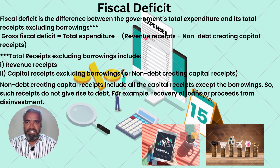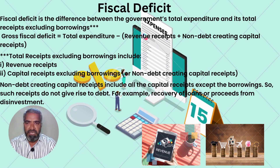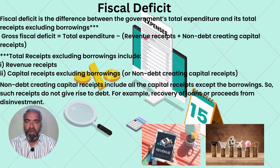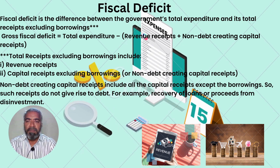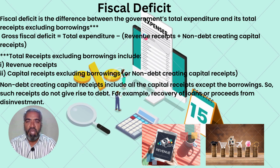Fiscal deficit is the difference between the government's total expenditure and its total receipts excluding borrowings. Gross fiscal deficit is equal to total expenditure minus revenue receipts plus non-debt creating capital receipts. Total receipts excluding borrowings includes revenue receipts and capital receipts excluding borrowings, i.e., non-debt creating capital receipts.